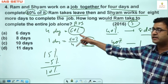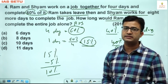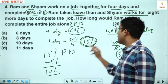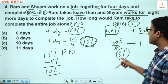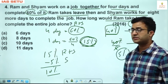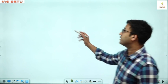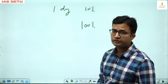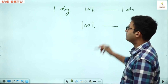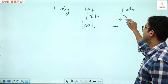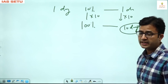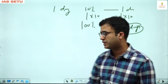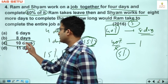This is time and work combined with percentage concept. Ram and Shyam together 15 percent per day; Shyam alone 5 percent per day; so Ram alone 10 percent per day. If Ram does 10 percent work in one day, complete work is 100 percent, so Ram alone will take 10 days. Question number 4 answer is C — 10 days.